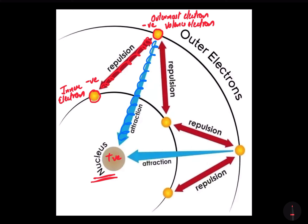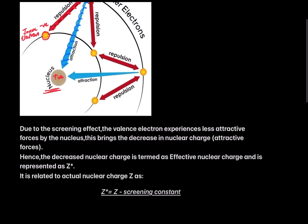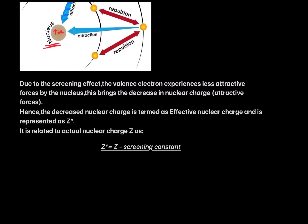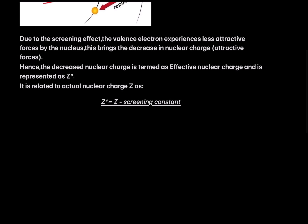This reduced nuclear charge — or reduced attractive forces of the nucleus for the outermost electron — is termed as effective nuclear charge. Due to the screening effect, the valence electron experiences less attractive forces by the nucleus, bringing a decrease in nuclear charge for the outer electrons. This decreased nuclear charge is termed effective nuclear charge and is represented as Z*. It is related to the actual nuclear charge Z as: Z* = Z − σ (screening constant).